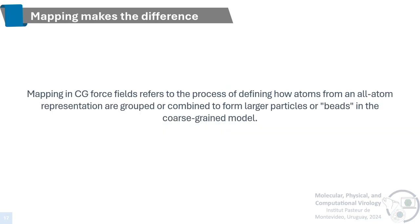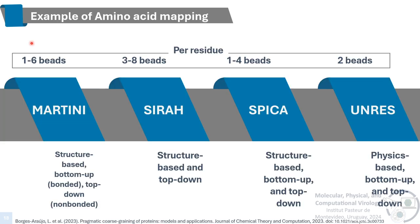So what are the differences between the force fields? Mapping is the key difference. Mapping in coarse-grained force fields refers to the process of defining how atoms from an all-atom representation are grouped or combined to form the beads in the coarse-grained model — this is the fundamental step of the force field. Looking at the force fields mentioned, we need one to six beads to represent a residue for Martini, three to eight beads for Syrah, one to four beads for Spica, and two beads for Ambras.